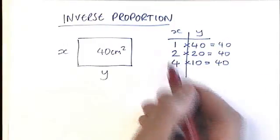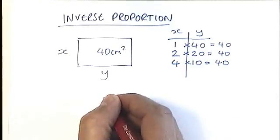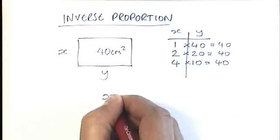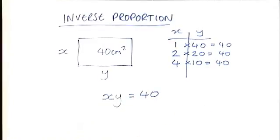These two variables, x and y, are now in what we call inverse proportion. They vary inversely with each other. And what all this means is that when you multiply them, you make a constant number, 40.